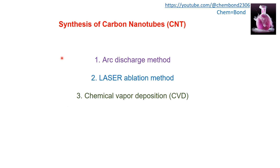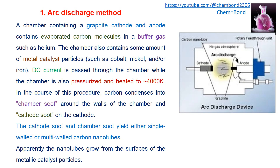Carbon nanotubes can be synthesized by three methods: the arc discharge method, the laser ablation method, and the chemical vapor deposition method. Chemical vapor deposition is the most commonly used method for the synthesis of carbon nanotubes.